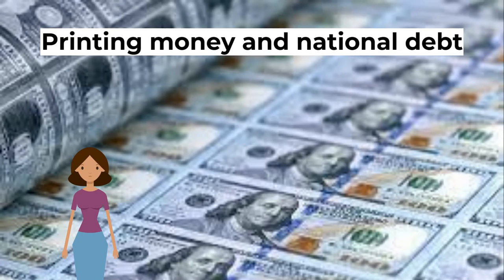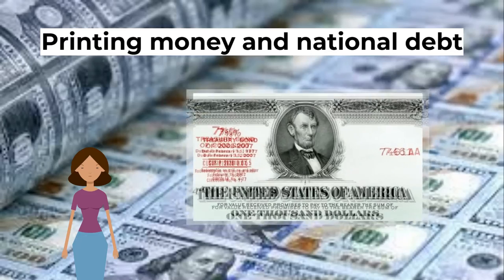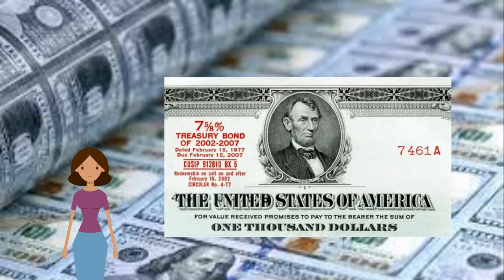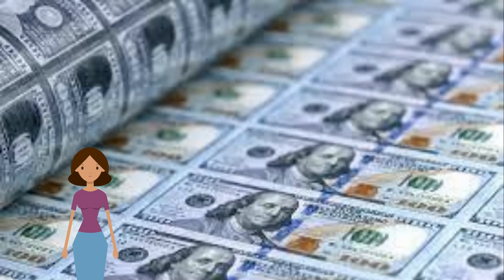What is the relationship between printing money and national debt? Governments borrow by selling government bonds to the private sector. Bonds are a form of saving, and people buy government bonds because they assume they are a safe investment. However, this assumes that inflation will remain low. If governments print money to pay off the national debt, inflation could rise. This increase in inflation would reduce the value of bonds, and if inflation increases, people will not want to hold bonds because their value is falling. Therefore, the government will find it difficult to sell bonds to finance the national debt.